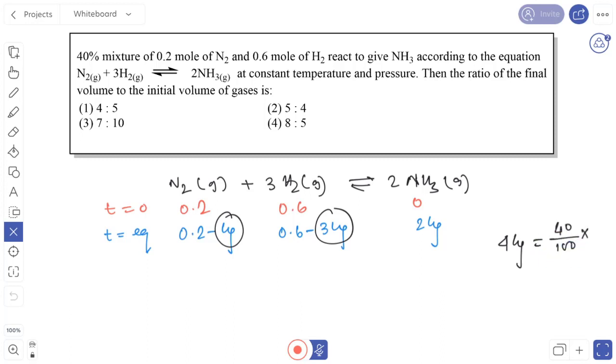40% of 0.8 mol. The total mixture is 0.2 and 0.6, which totals 0.8 mol, and 4xi equals 40% of 0.8. It is given in the problem that 40% mixture reacts. That means 4xi equals 40% of 0.8. From here we get xi equals 0.08.